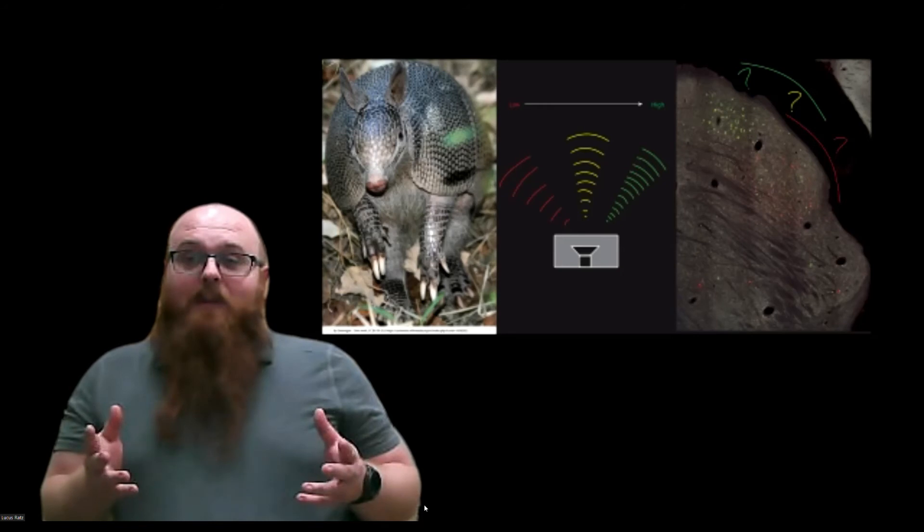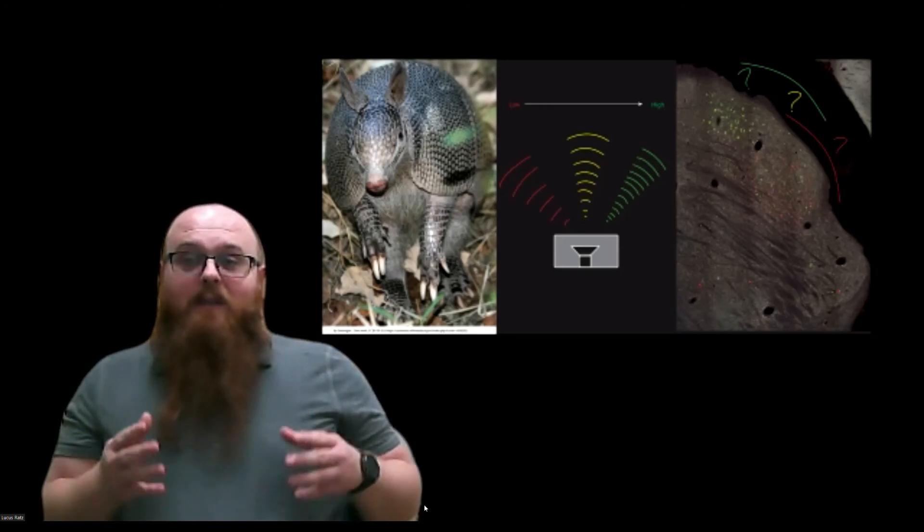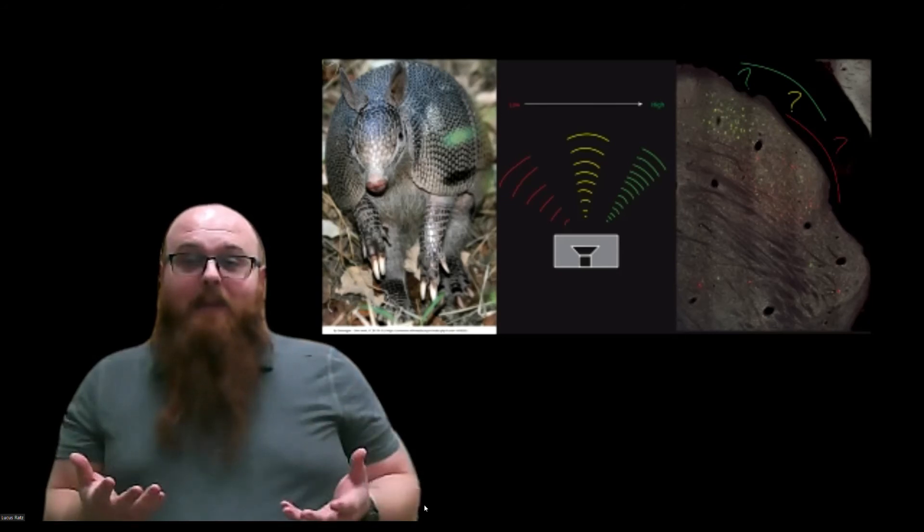Generally, we found that high and low-frequency regions of the MGN that project to auditory cortex were segregated, so there is a topography of frequencies in the thalamus.